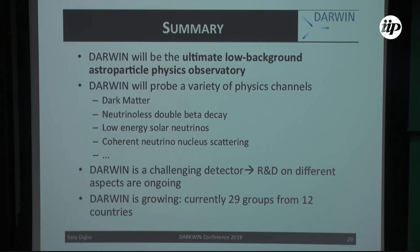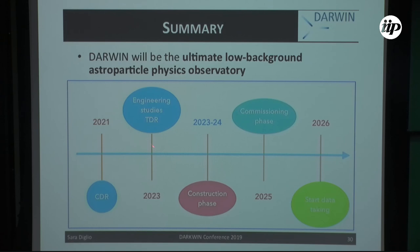In summary: Darwin is considered the ultimate low-background astroparticle physics observatory. It is not just for WIMP searches but also investigates other physics channels as described. This is technically very challenging, and there is extensive R&D ongoing as the Darwin project continues to grow. The schedule aims at starting data taking after completion of engineering studies and TDR, with R&D and perspective studies continuing in the meantime.